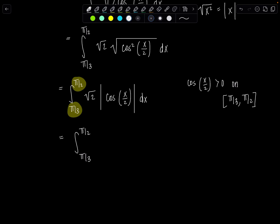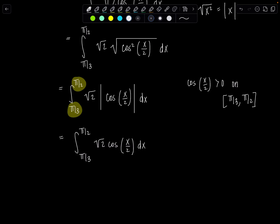Very good. If cosine had been negative on the interval, you would add an extra minus sign. I have a whole video on dealing with integrals that involve absolute value—I'll link it in the description. So then we have √2 cos(x/2) dx. And hopefully, you don't need to do a u-substitution.